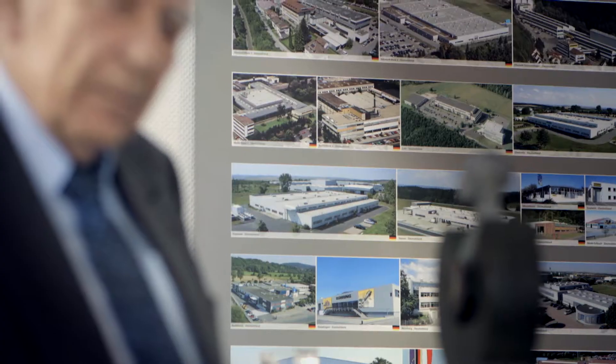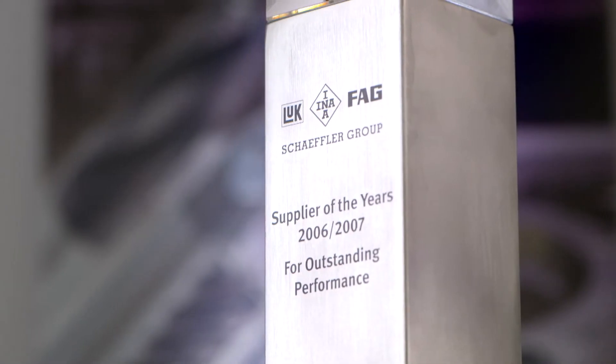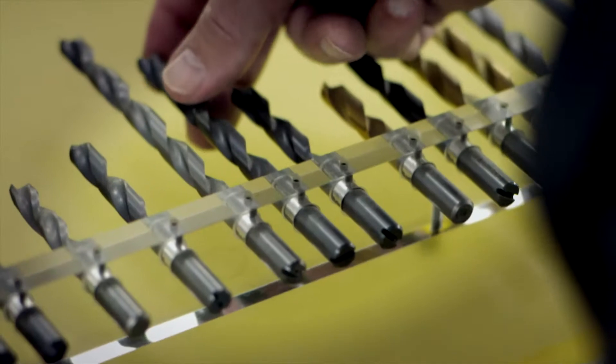The heart of the company still beats at the headquarters in the Swabian Alp. In the third generation, Dr. Jörg Göring has guided the family business into the globalised world, but remained loyal to the location where once the original twist drills were produced.